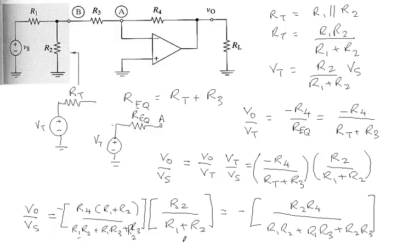Simplifying the terms by expanding first, we finally find that V0 over Vs equals the minus of R2 R4 divided by R1 R2 plus R1 R3 plus R2 R3.